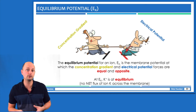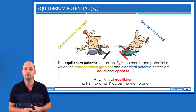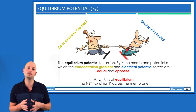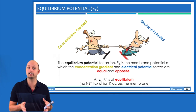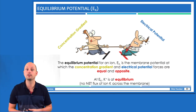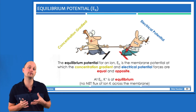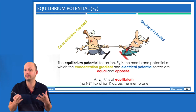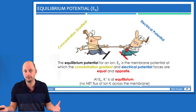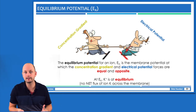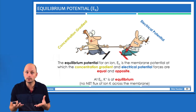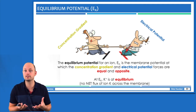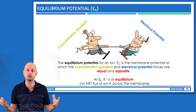Equilibrium potential is the voltage that a single ion would create if it were allowed to balance its concentration gradient and electrostatic forces. Another way to phrase this is that equilibrium potential is the voltage that each ion wants the membrane to be at — in many cases it's just a hypothetical thing you're trying to achieve. Membrane potential, on the other hand, is determined by the equilibrium potentials of all permeable ions, so it's the voltage created by this big electrochemical tug of war.